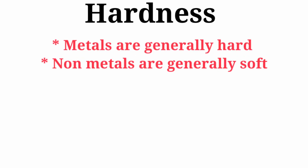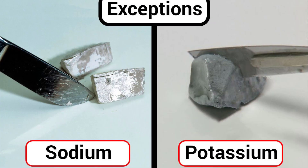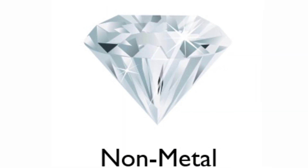Now let us discuss some physical properties of metals and non-metals. 1. Hardness: Metals are generally hard and non-metals are generally soft. But the exceptional case in metals is sodium and potassium — they are soft metals. On the other hand, diamond is the hardest substance found in nature and is considered a non-metal.